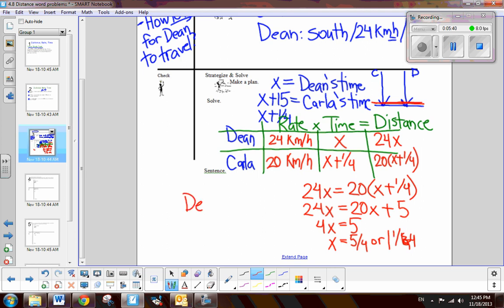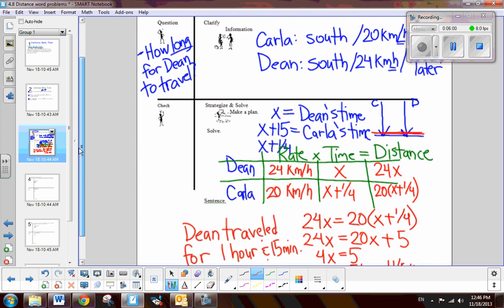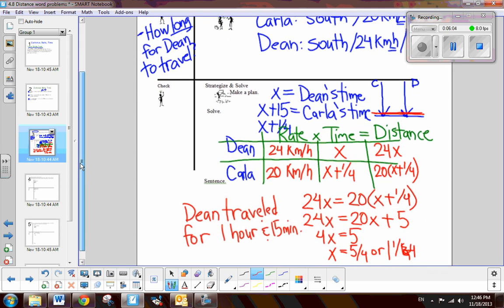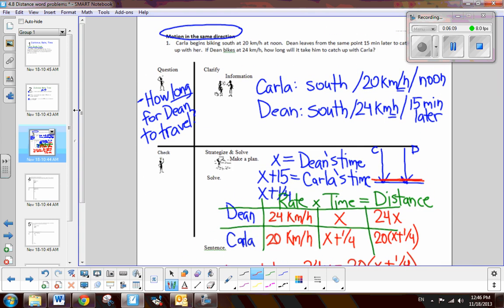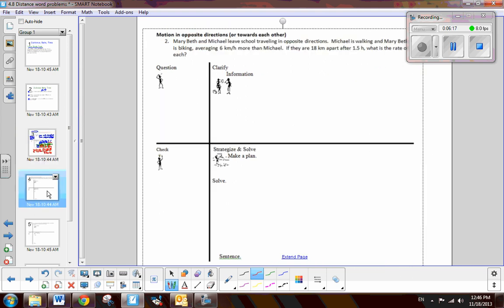So, Dean traveled for an hour. Now, 1 fourth is what? We wouldn't say 1 and 1 fourth hours, would we? Well, maybe. But, Dean traveled for, generally we'll convert it to minutes, 1 hour and 15 minutes. Now, check. Did we answer the question? Yes, we did. The question was, how long did Dean travel? And, I used my units. Now, that's the first type of example. This is where people are moving in the same direction. Now, you should have all of these notes taken down, because these are going to be your three example problems that you will refer to later.